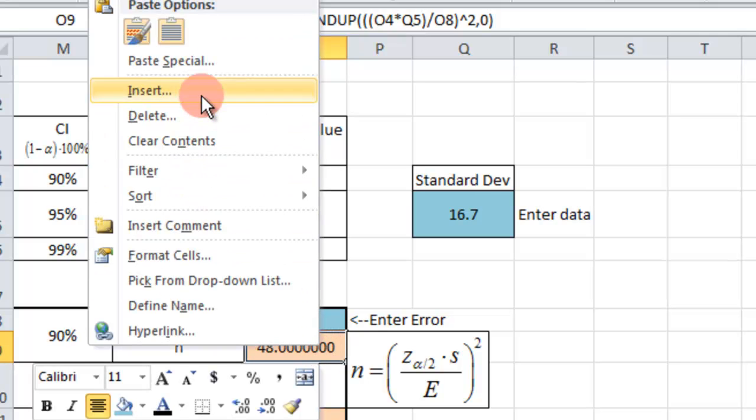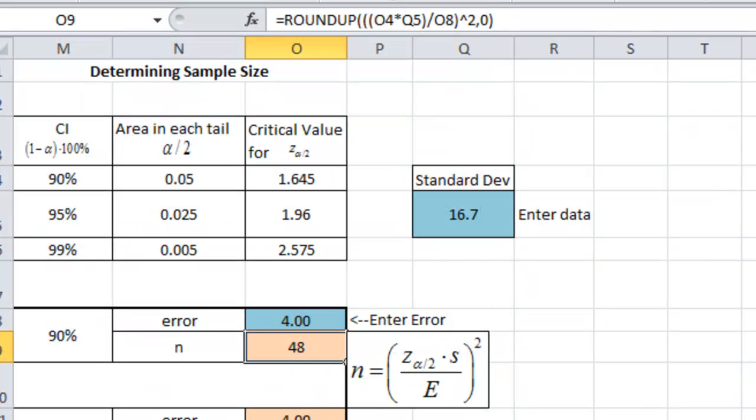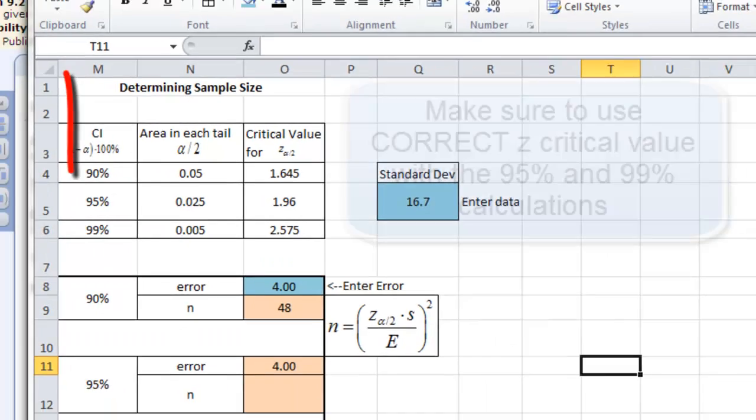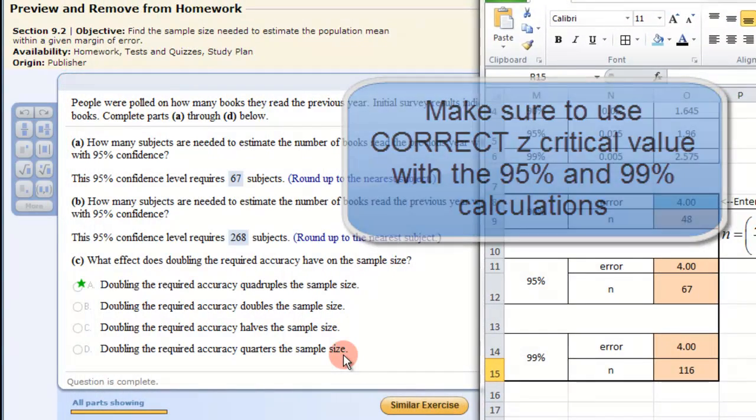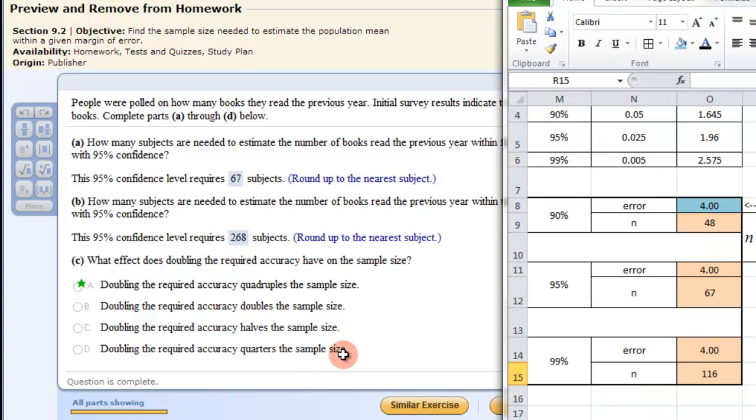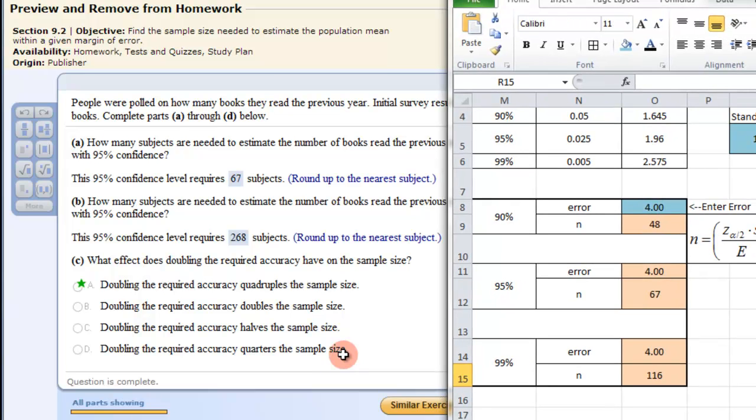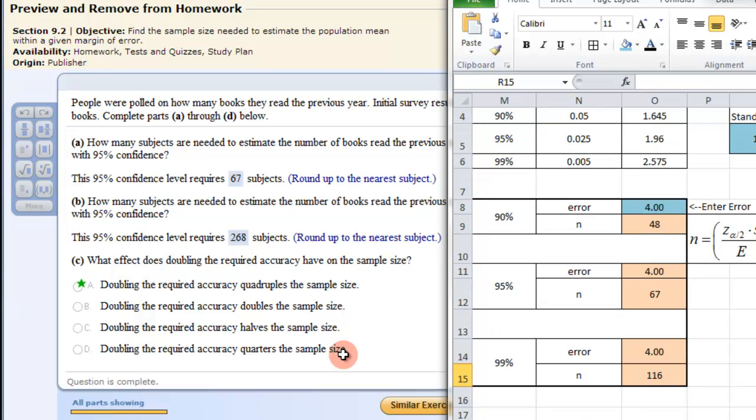So you can just leave it as the 47.1234 whatever it is, and you can remember to round it up because you can't have a fraction of a person or a fraction of a book or something. Now I'll calculate those things with the same things down here. So now we have them all figured out and then we can go back to our question. It said for a 95% confidence interval requires 67 subjects, and that's what we have here. For the 95% confidence interval we have 67. For 90% you need 48, and for a higher confidence level you need 116.